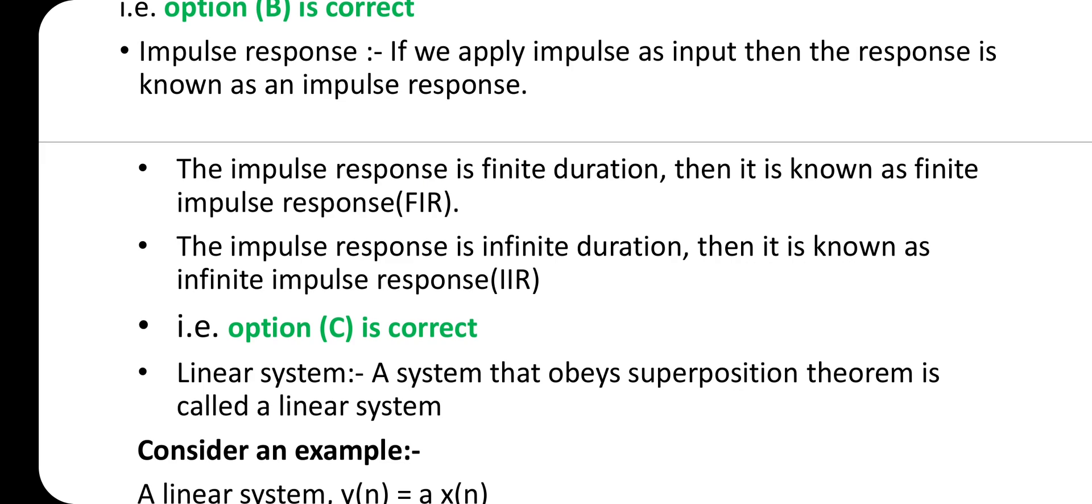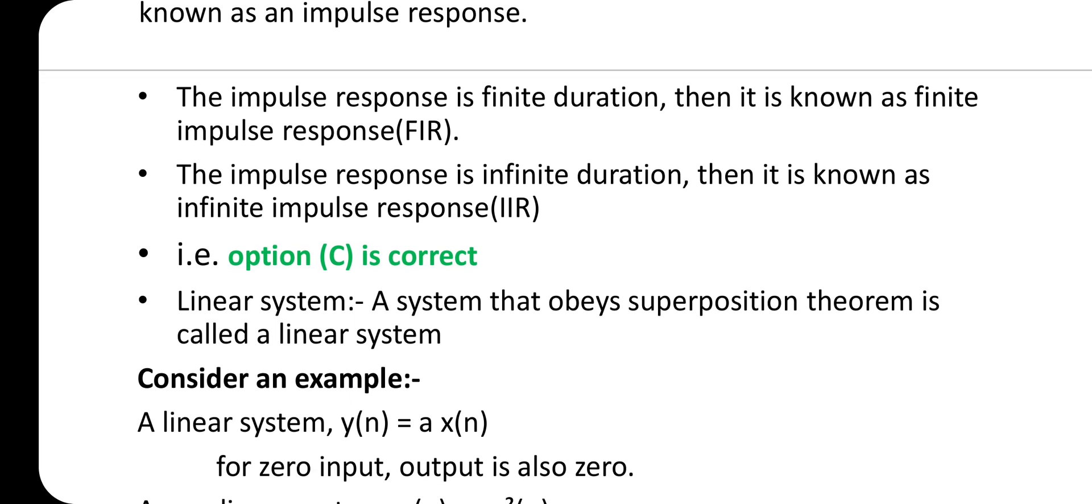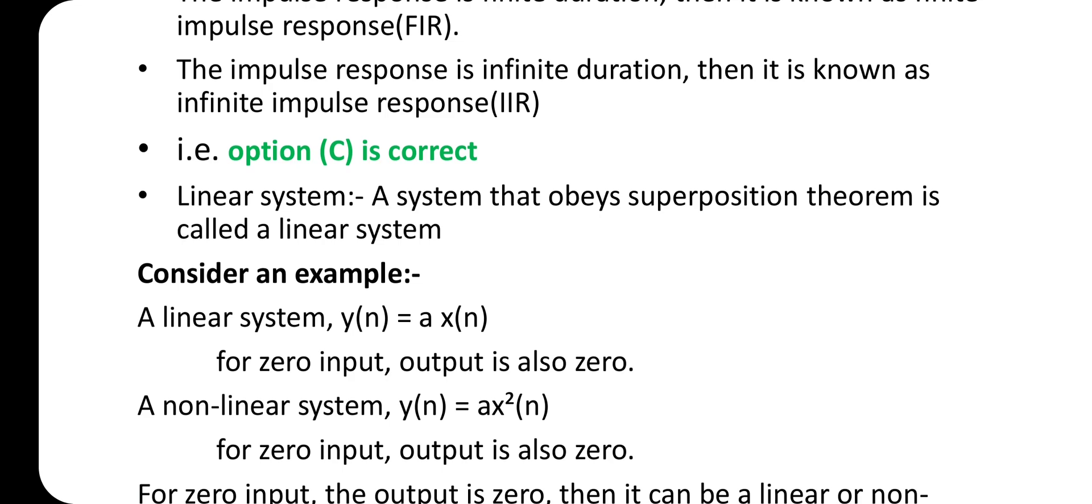Impulse response: If we apply impulse at the input, the response is known as impulse response. If the impulse response is finite duration, it's known as finite impulse response (FIR). If the impulse response is infinite duration, it's known as infinite impulse response (IIR). Therefore, option C is also correct.